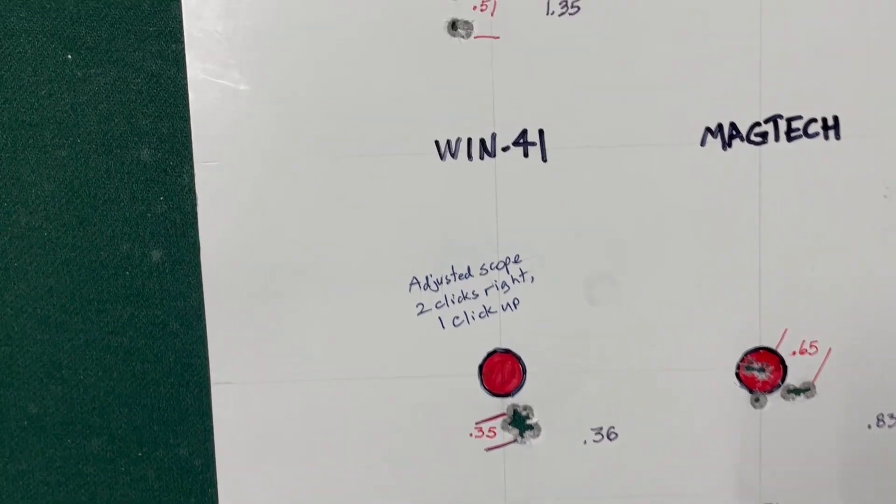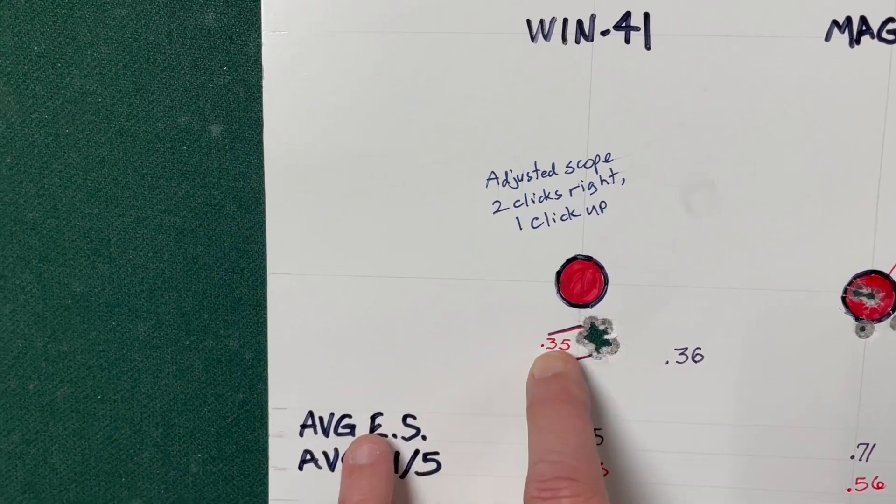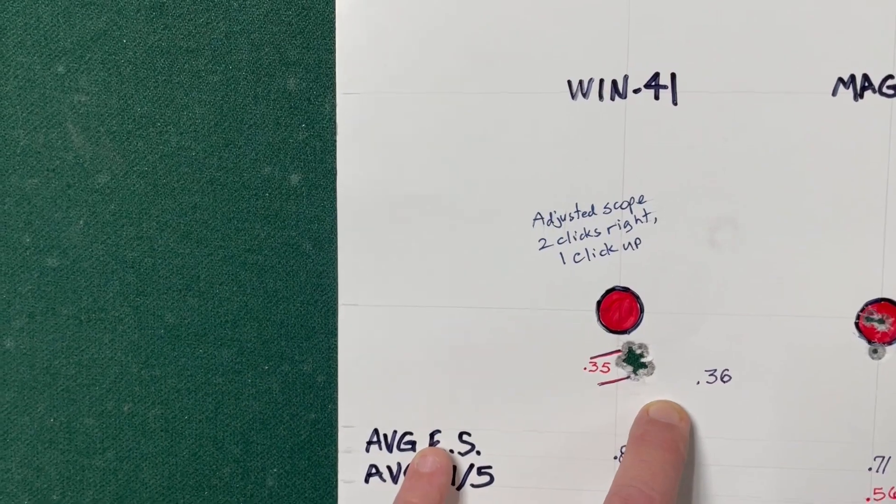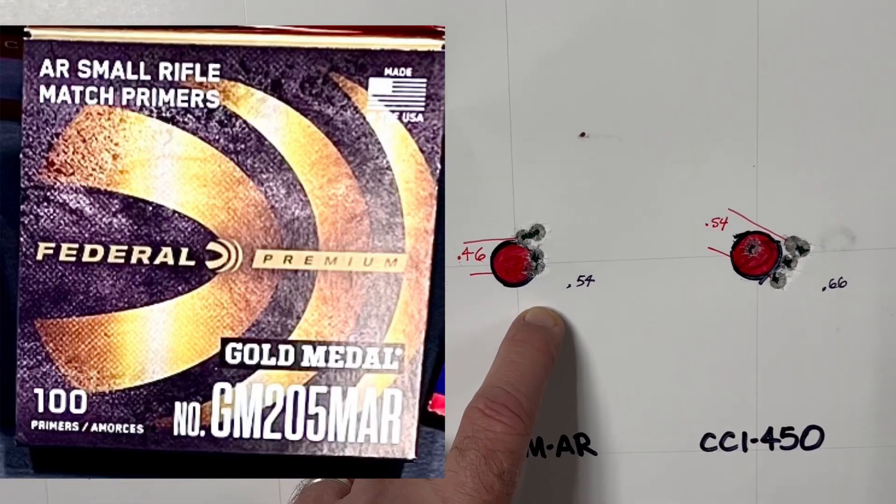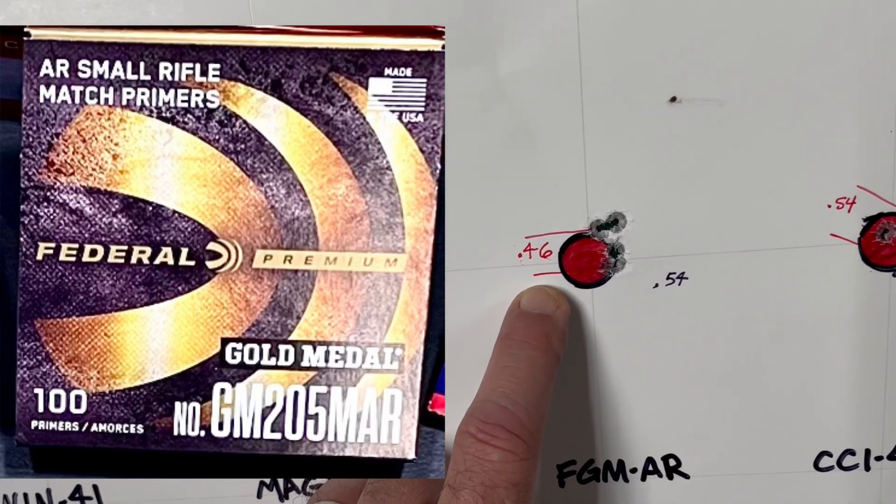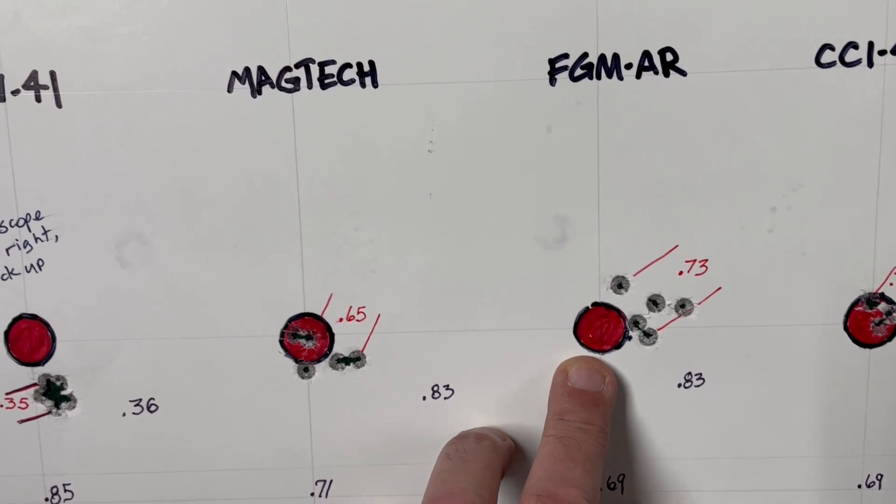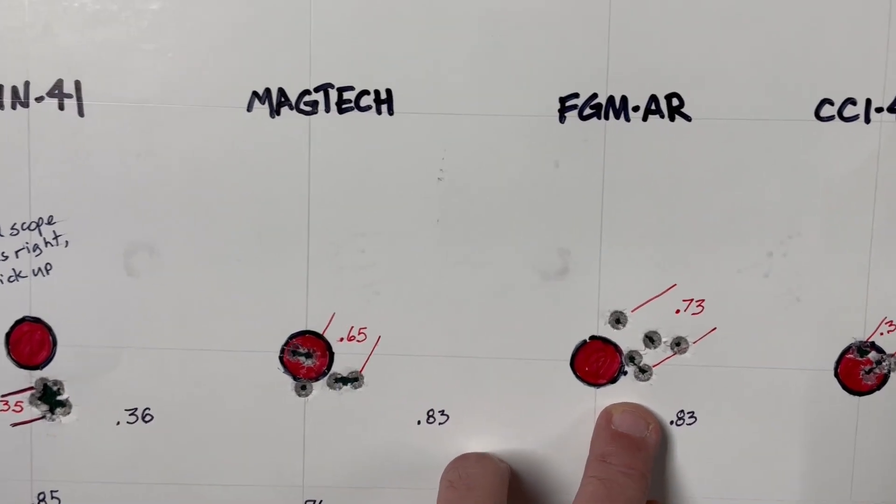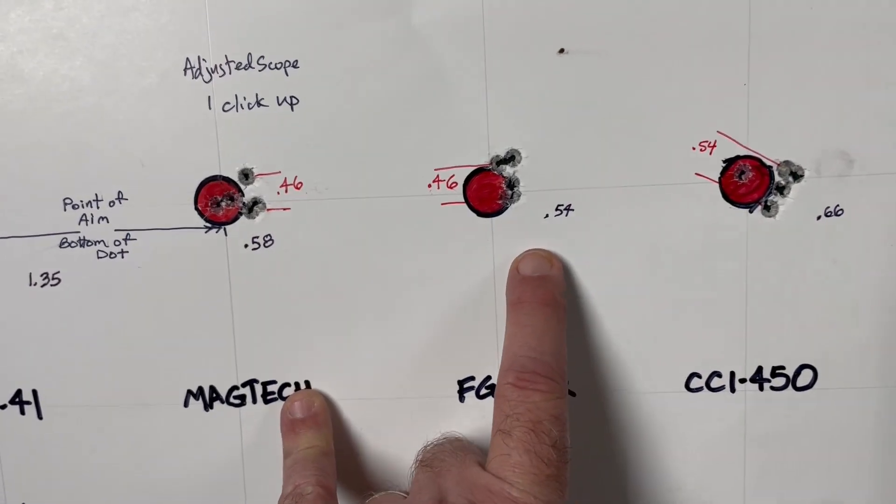So overall, I'm going to say that Winchester number 41 is the winner here. Because after this gun got warmed up, I had a .36 and they were clustered together there. And the best four out of five is .35, they were so close together. Runner up would be Federal Gold Medal AR Match Primers, where I had a group of .54 with the best four out of five at .46. Not sure what happened here, why this one opened up, but maybe I was tired, distracted, not breathing properly, who knows. Difference in the case weight, I have no idea. But still very pleased with this .54 group.